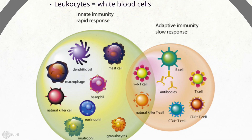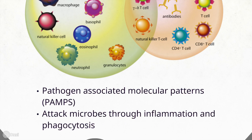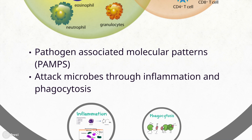The cells responsible for innate immunity are leukocytes, also known as white blood cells. These cells include macrophages, neutrophils, eosinophils, basophils, and natural killer, or NK, cells. These cells can recognize foreign molecules because pathogens such as bacteria and viruses have conserved features known as pathogen-associated molecular patterns, or PAMPs. In the presence of pathogens, these white blood cells can recognize PAMPs and mount an attack.